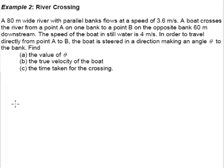Example 2 - another river crossing question. This time, the river is 80 meters wide with parallel banks flowing at the speed of 3.6 meters per second. The boat crosses from a point A on one bank to another point B on the opposite bank, 60 meters downstream. The speed of the boat in still water is 4 meters per second.